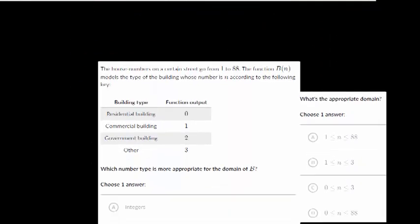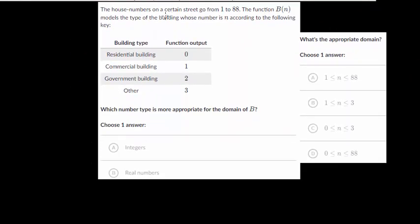Let's do one more of these. So we have the house numbers on a certain street that go from 1 to 88. The function b(n) models the type of building whose number is n according to the following key. So we have residential, commercial, and government.